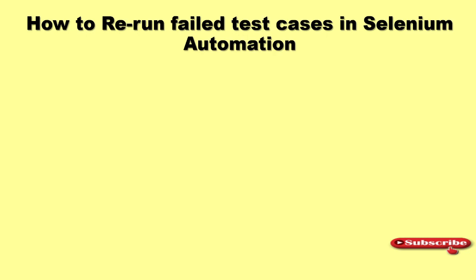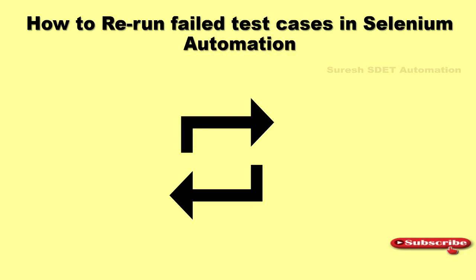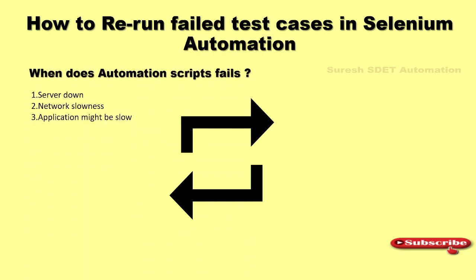This topic is most important where we want to implement a rerun mechanism in our automation testing, so that our automation scripts work in all conditions. There are three parameters when our test automation can get failed: one is a server down issue, network slowness issue, and the application might be slow. Additionally, your application might have a bug. If the application has a bug, we can directly log a Jira ticket. But if you have the three environmental issues — server down, network slowness, and application slowness — then you need to rerun your test cases.